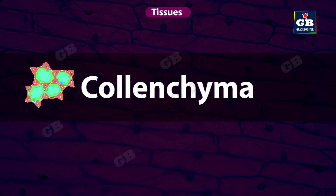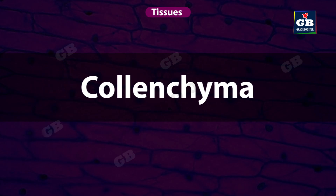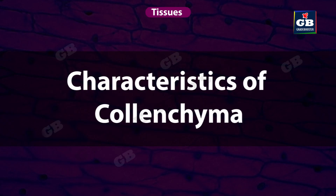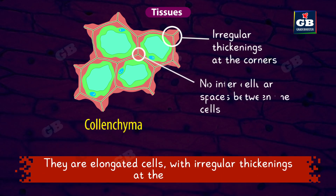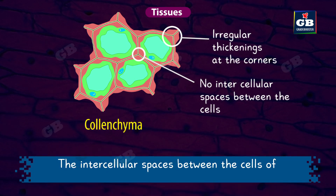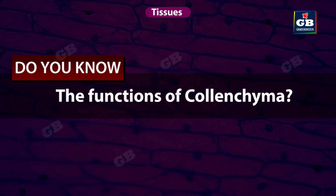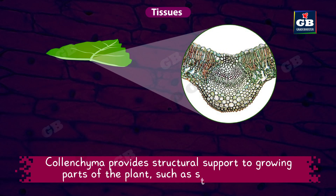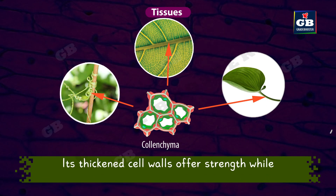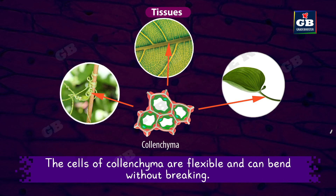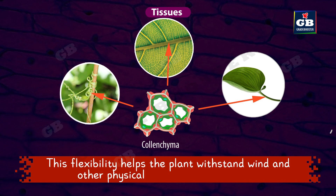Next, we see another type of simple permanent tissue called colenchyma. The cells of colenchyma are living cells. They are elongated cells with irregular thickenings at the corners. The intercellular spaces between the cells of colenchyma are very less. Colenchyma provides structural support to growing parts of the plant, such as stems and leaves. Its thickened cell walls offer strength while allowing flexibility. The cells of colenchyma can bend without breaking, which helps the plant withstand wind and other physical forces without damage.